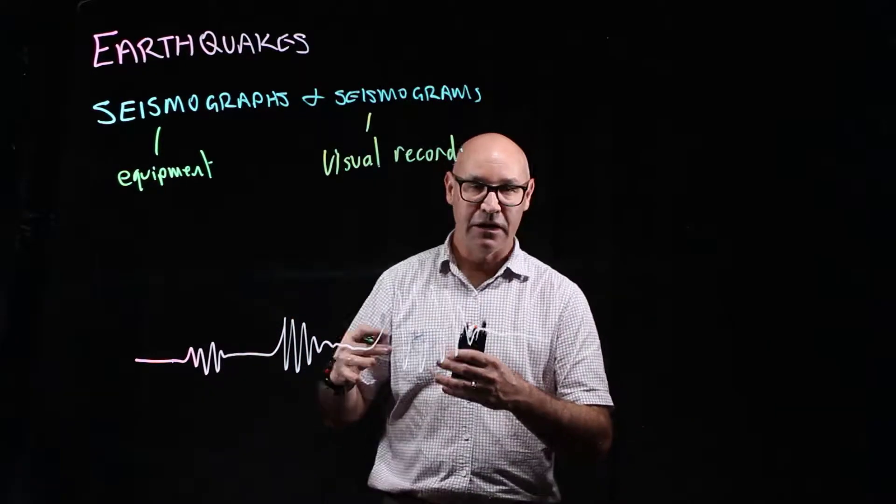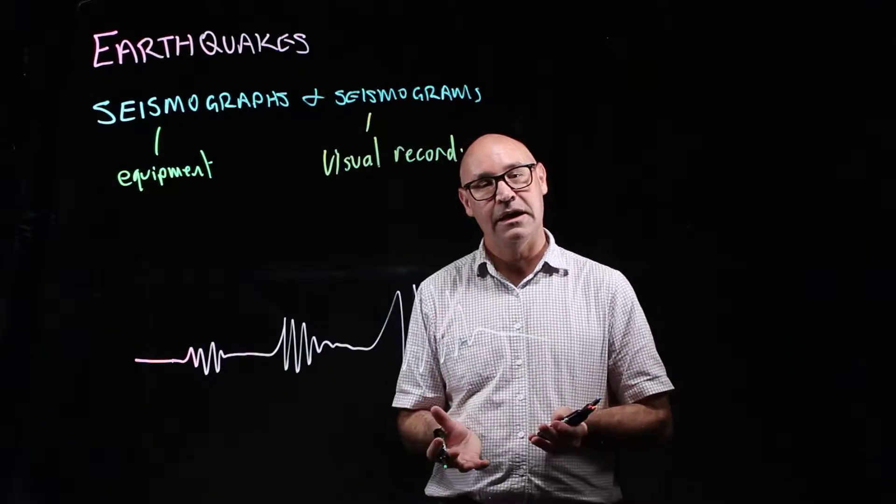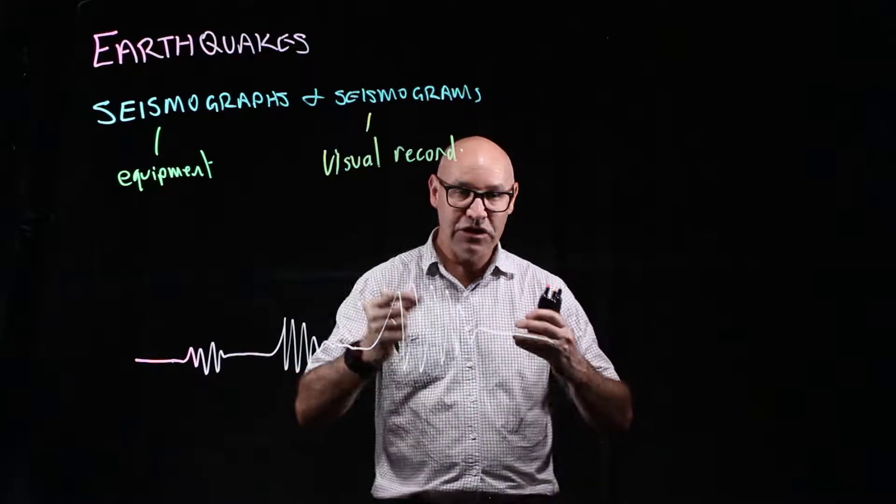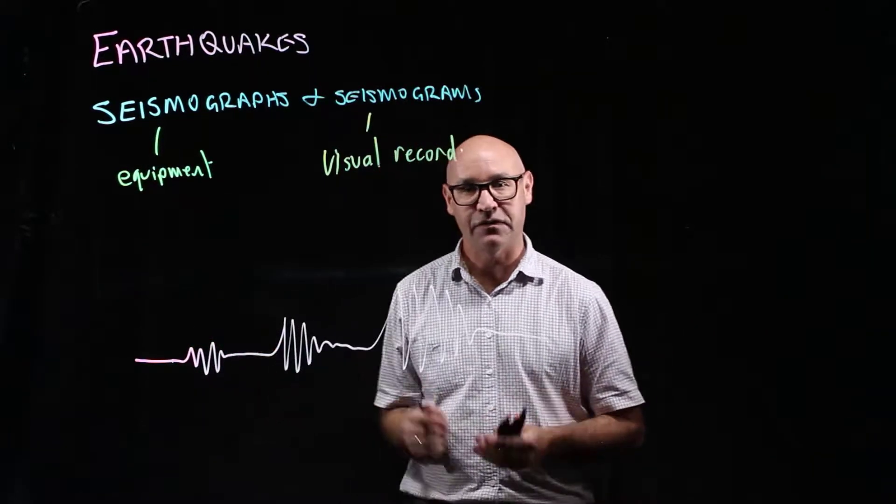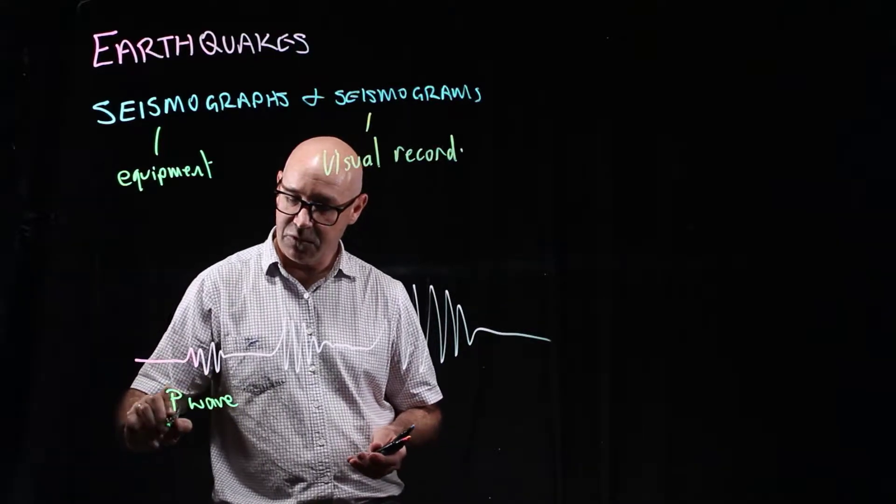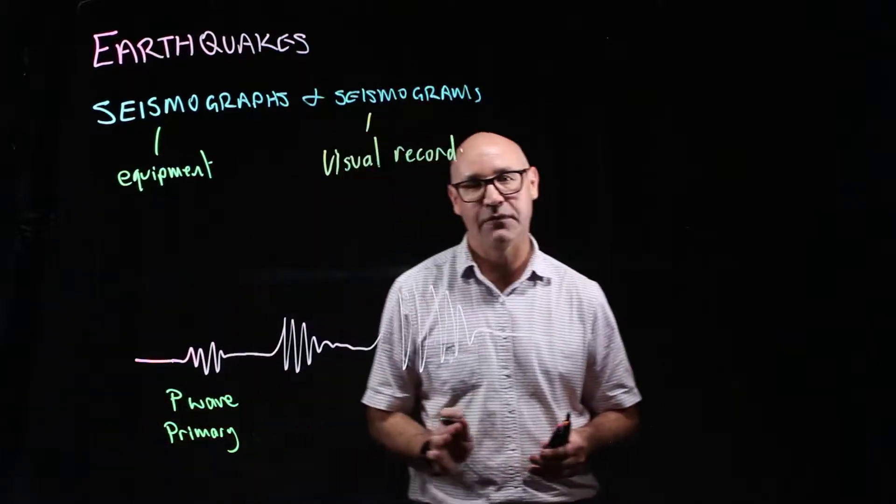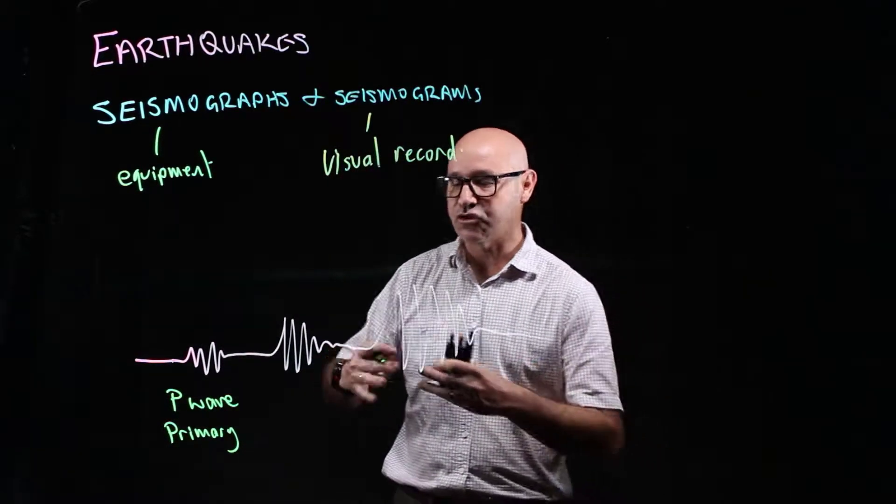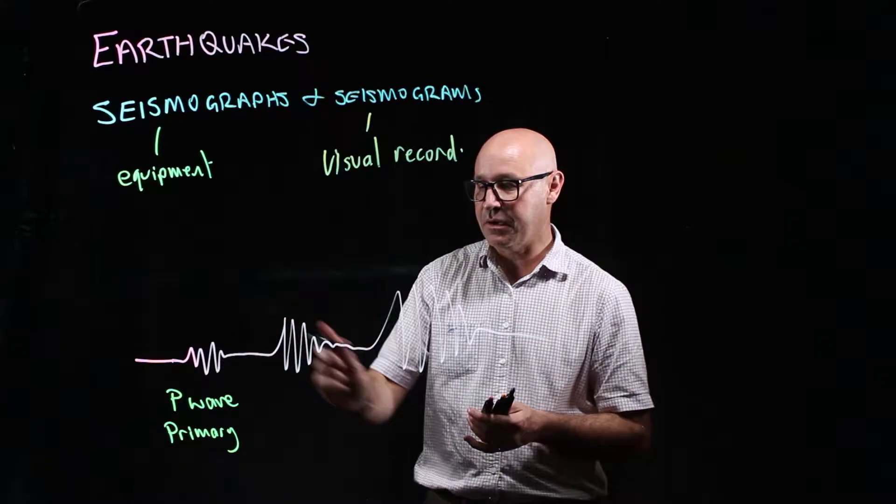When we talk about seismic events, we talk about seismic waves. So the vibrations are in waves. The first wave that gets detected is called the P wave. Now, the P stands for primary. So it's the primary wave. It's the first one that travels to the seismic station or anywhere. It's the P wave.